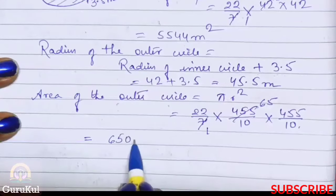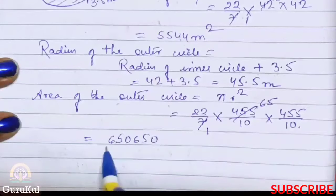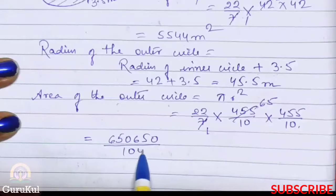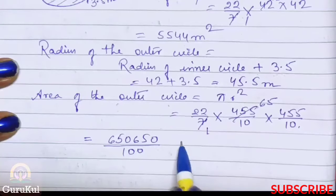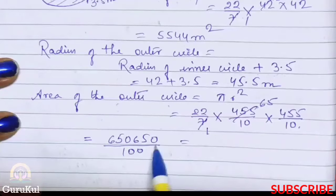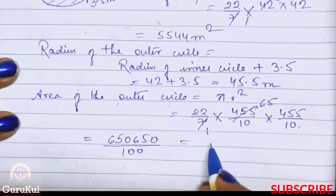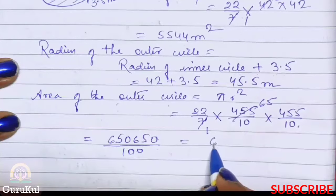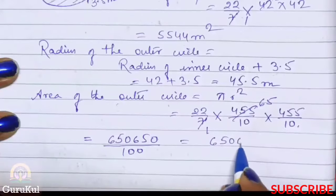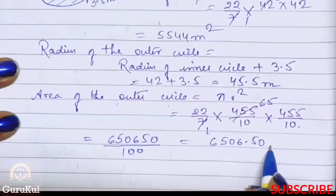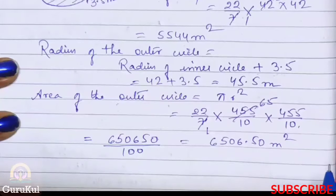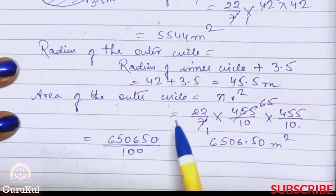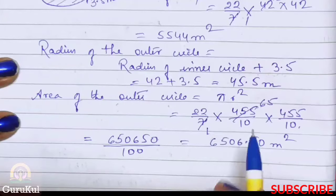So we will get 650, 650, 650 by 100. So one two, one and two. So where will we place the decimal? 6,506.50 meter square. So now we got the area of both circles.